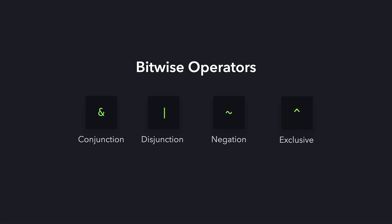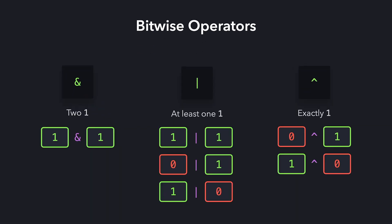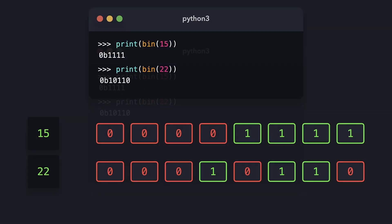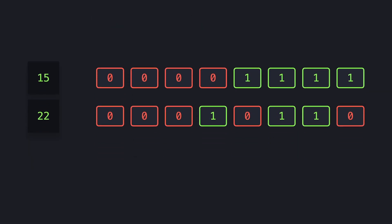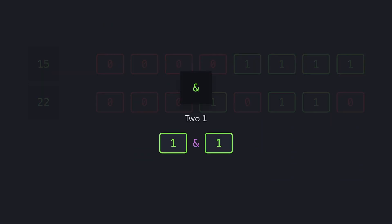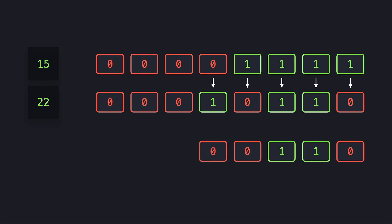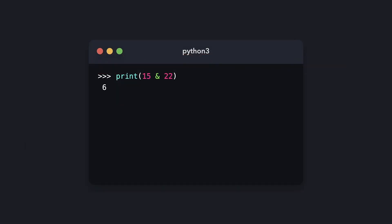The first operator, the ampersand (&), is used for bitwise conjunction. For example, let's perform the bitwise AND operation with the integers 15 and 22. Let's visualize these bits. The conjunction bitwise operator only returns 1 if both bits are 1; otherwise it returns 0. In this example: 1 AND 0 returns 0, 1 AND 1 returns 1, 1 AND 1 returns 1, 1 AND 0 returns 0, and 0 AND 1 returns 0. These bits correspond to the integer 6, so when we print the result of the bitwise operation, 6 gets printed correctly.